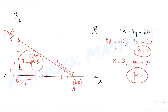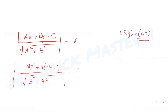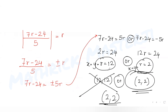To recap: we found where the line 3x + 4y = 24 intersects the axes to get points A and B. With the origin O, we formed triangle OAB. We inscribed the incircle, used the fact that the incenter is at (r, r), then applied the perpendicular distance formula to find r = 2. So the incenter is (2, 2) — option B.